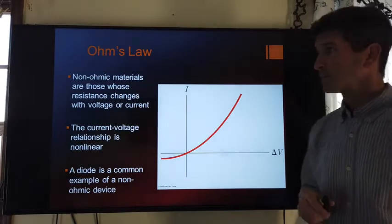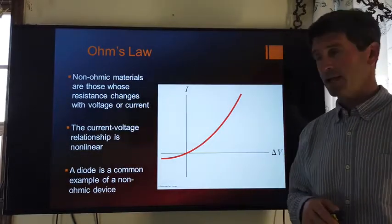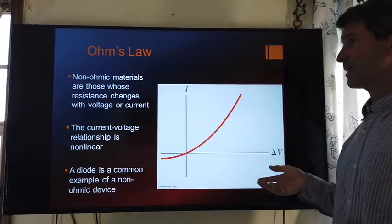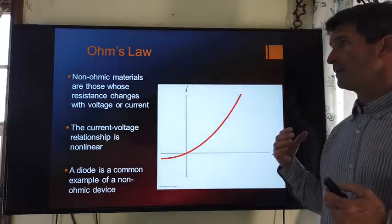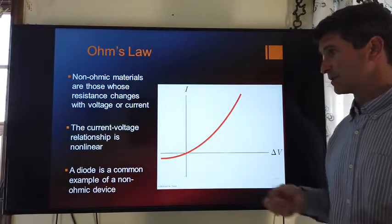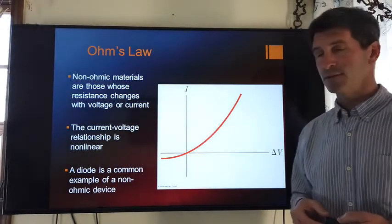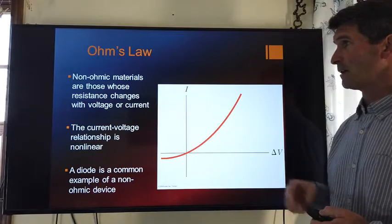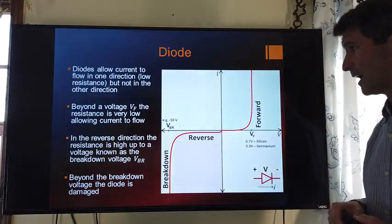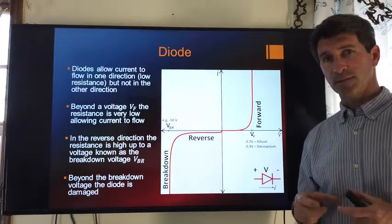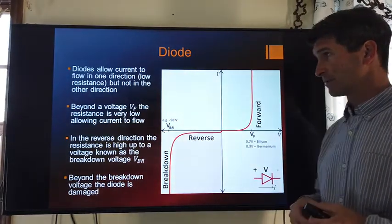Some devices, however, do change the resistance as a function of current and voltage. In these types of devices, then R is not constant. We don't get a straight line. And probably the most common device, which does not follow Ohm's law, would be a diode. Now, a diode is a semiconducting material. It's actually a sandwich of two materials put together.